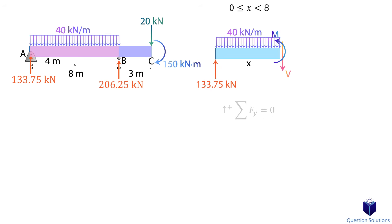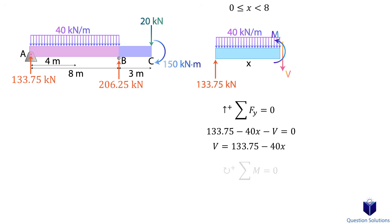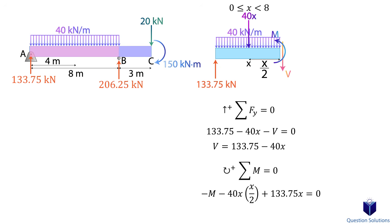Let's draw the first segment separately with length x. We have the vertical reaction at A, the distributed load, the shear force, and the moment. We don't care about the reaction at B since that's where we made the cut. For the shear force, we write an equation of equilibrium for the y-axis forces: we have the reaction at A, then the distributed load multiplied by the variable length x, then the shear force. To find the moment, we take the resultant force of the distributed load (40 times x), place it at the midpoint (x divided by 2), and combine with the reaction at A times the perpendicular distance x. Let's isolate for the moment.